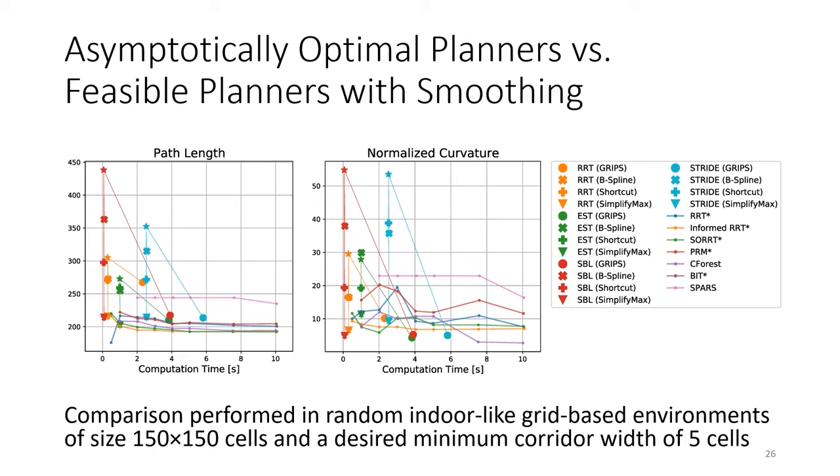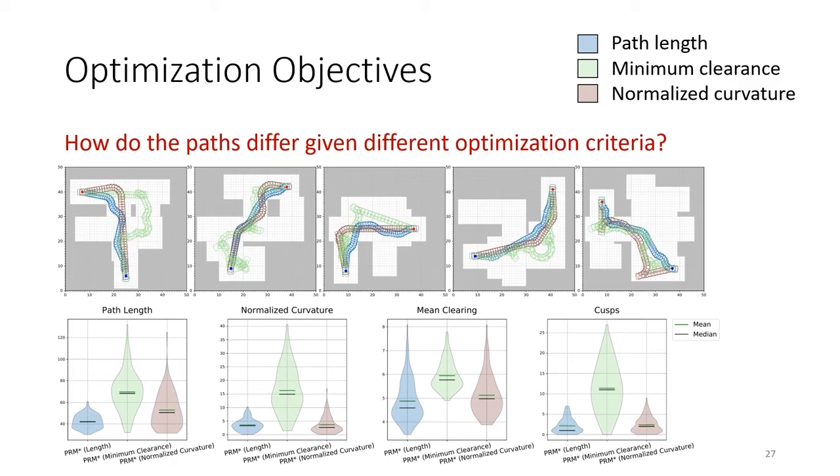In our final experiment, we show how BenchMR allows us to analyze the behavior of a sampling-based algorithm by varying the optimization criterion it is using. In the top row, we visualize the trajectories resulting from three different optimization criteria, namely path length, minimum clearance, and normalized curvature.